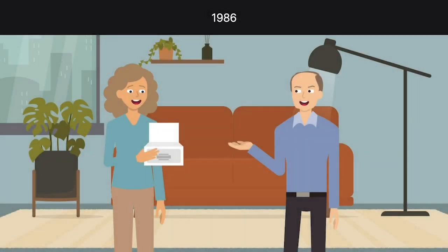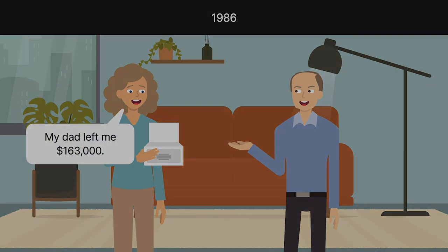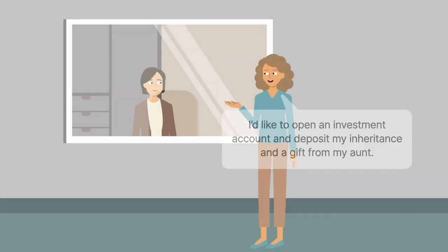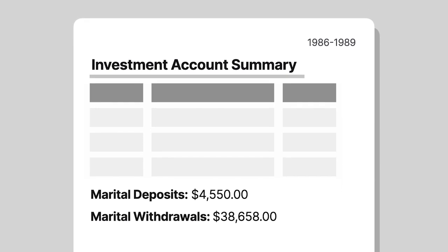While married to Richard O'Brien, Mabel O'Brien received a large inheritance from her father. She opened an investment account, into which she deposited most of the inheritance, as well as money she received as a gift from her aunt. Over the next few years, Mabel and Richard added a small amount of marital funds, but withdrew a significantly greater sum for marital purposes.